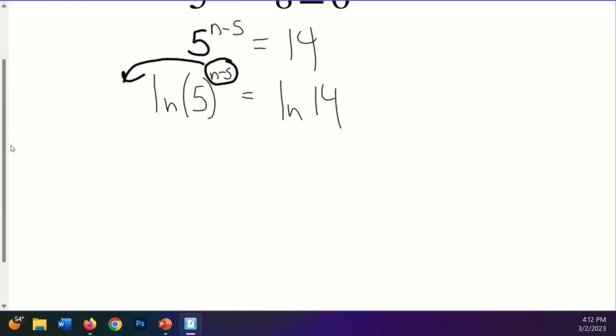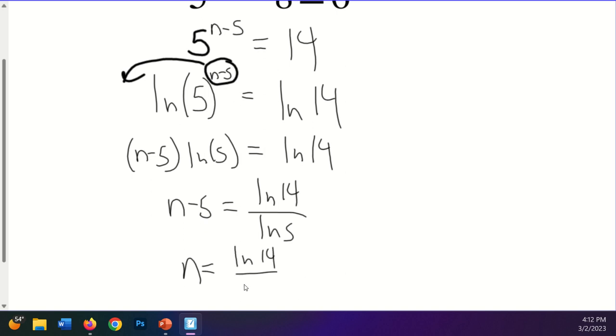And so in the next step, I'll write this as n minus 5, ln of 5 equal to the ln of 14. Now I could distribute this ln of 5 if I want, but to make it easier on myself, I'm going to divide both sides by the ln of 5. And I'll have n minus 5 equals the ln of 14 over the ln of 5. And then getting n by itself is just a simple matter of adding 5 to both sides. So I'll have the ln of 14 divided by the ln of 5 plus 5.